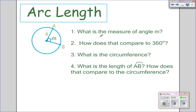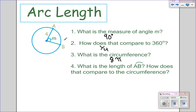Here's another example. What is the measure of angle M? It's 90 degrees. How does that compare to 360? It's a fourth. The circumference would be 4 times 2, so 8 pi. If I want to know the length of AB, I need to take a fourth of the whole circumference, because I only want a fourth of the circle, so 1 fourth of 8 pi would be 2 pi.